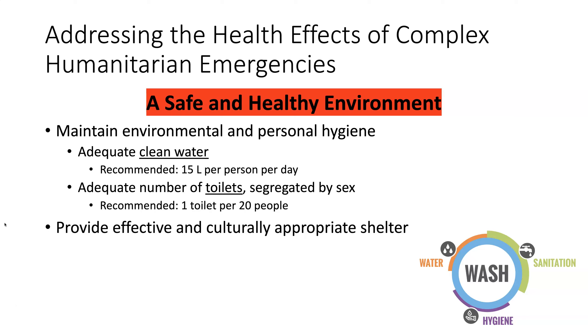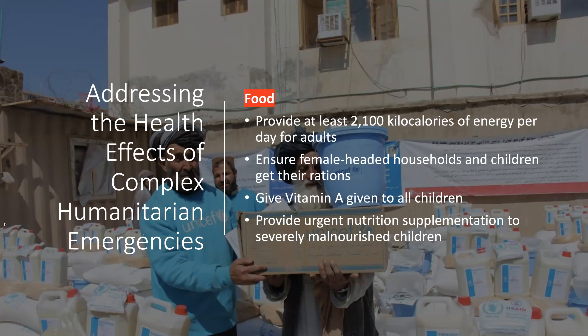A healthy and safe environment requires WASH — maintaining environmental and personal hygiene, ensuring adequate clean water, and an adequate number of sex-segregated toilets, and providing effective and culturally appropriate shelter. Regarding food, provide at least 2,100 kilocalories of energy per day for adults, ensuring that female-headed households and children receive their rations, giving vitamin A to all children, and providing urgent nutritional supplementation to severely malnourished children.